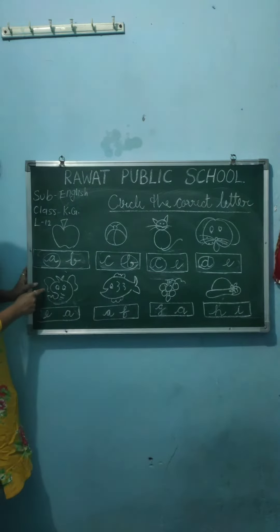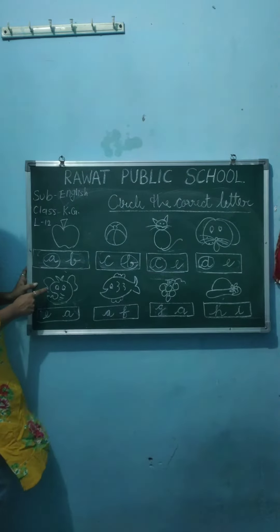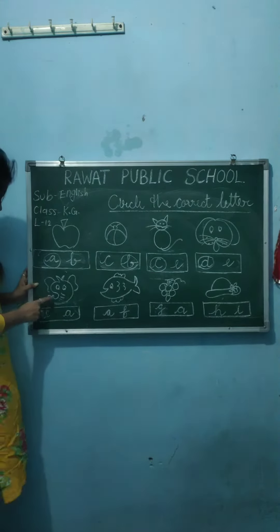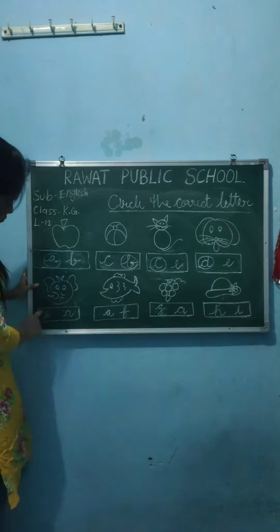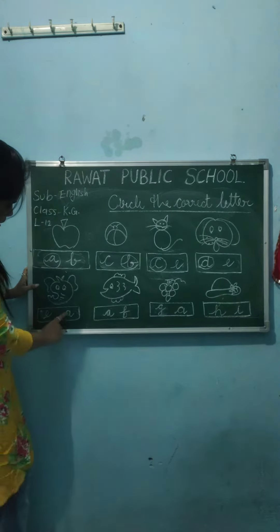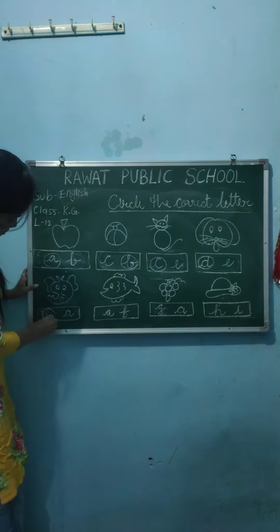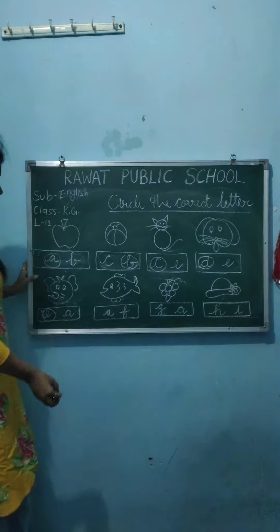Now next. What is this? Elephant. Which one is E? Here. Make a circle.